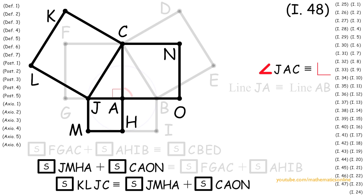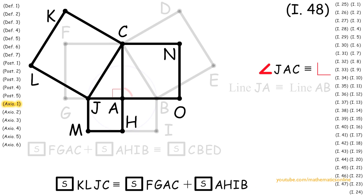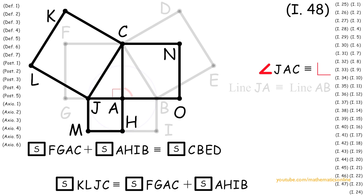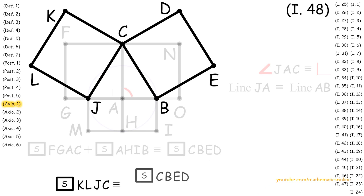Since square JMHA plus square CAON is congruent to square FGAC plus square AHIB, then it follows by Axiom 1 that square KLJC is congruent to square FGAC plus square AHIB. Now since square FGAC plus square AHIB is congruent to square CBED, then by Axiom 1, square KLJC is congruent to square CBED.